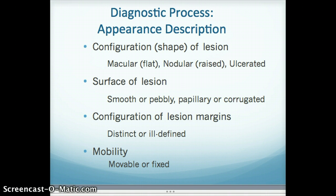Are the lesion's margins very distinct? If the margins are distinct, that tells you a little bit about what type of lesion it might be. Some lesions are ill-defined and we have a difficult time finding the margins — that is also significant. And lastly, is the lesion mobile? When you palpate it with both gloved hands, is it very fixed in place, like to the attached gingiva, or is it a lesion that you can move around as you palpate the tissue?